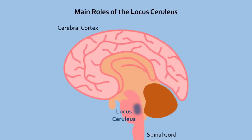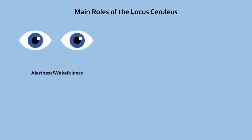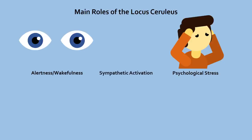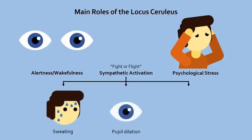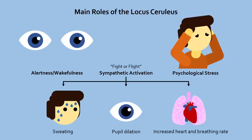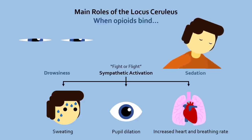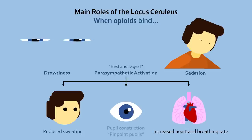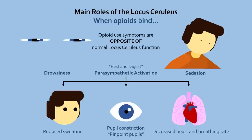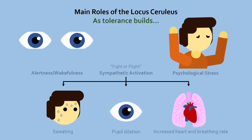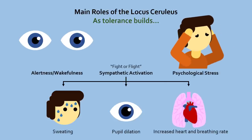The locus coeruleus is located in the brainstem, and its function is to keep us awake and alert, or make us feel stressed. It is also involved in activating the sympathetic nervous system — our fight-or-flight response — which when activated causes sweating, pupil dilation, and increased heart and breathing rate. The locus coeruleus has opioid receptors, so when opioids bind to neurons there, they shut them down to cause common side effects such as drowsiness, sedation, dry skin, pinpoint pupils, and slowed heart and breathing rate — all opposite of the functions of the locus coeruleus. However, these neurons slowly become tolerant to opioids by preemptively increasing cAMP levels, so opioids are less able to create these symptoms.